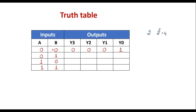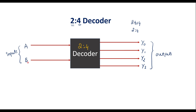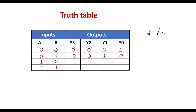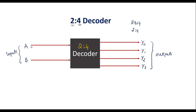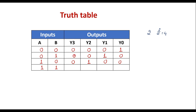Similarly, when A is 0 and B is 1, then Y1 line is high and rest all lines are 0. When A is 1 and B is 0, Y2 line is high and rest all are 0. Similarly, when A is 1 and B is 1, Y3 line is 1 and rest all are 0. So thus we have written the truth table, which gives the relationship between input and output.